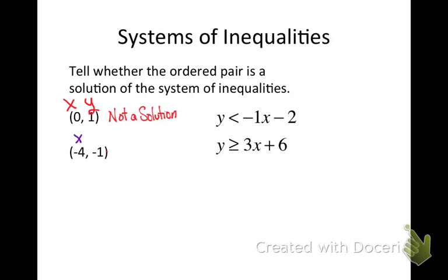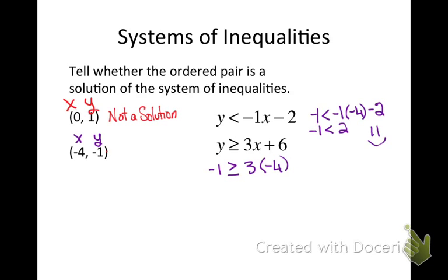Now let's look at the point (-4, -1). I replace y with -1 and x with -4 in the first inequality, and I get -1 is less than 2. That is a true statement. So I try those x and y values in my second inequality — replacing y with -1 and x with -4 — and I get -1 is greater than or equal to -6, which is also a true statement. Since it made both inequalities true, this point is a solution.